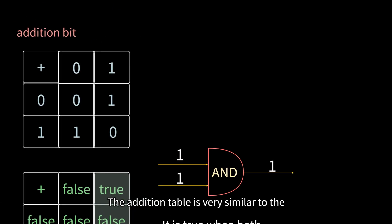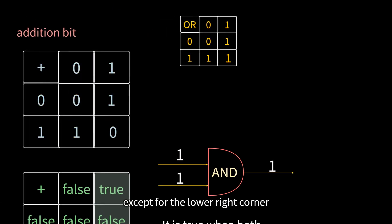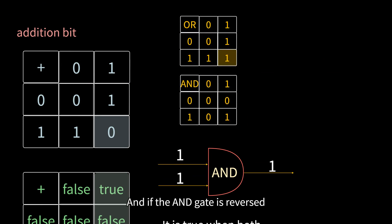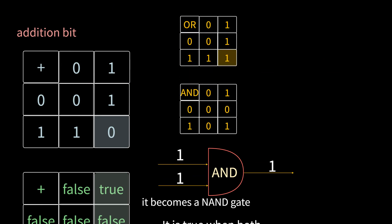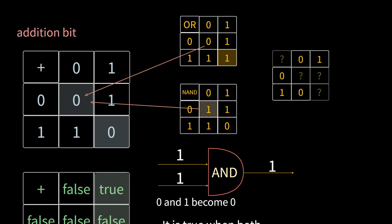The addition table is very similar to the OR gate, except for the lower right corner. And if the AND gate is reversed, it becomes a NAND gate, which is quite similar, except for the upper left corner. So, can you combine these two in turn? 0 and 1 become 0, 1 and 0 become 0, and the others are 1.